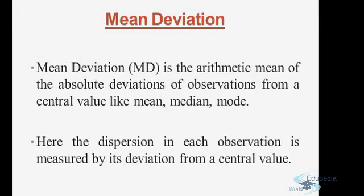Mean deviation is the arithmetic mean of the absolute deviations of observations from a central value like mean, median, or mode. Here, the dispersion in each observation is measured by its deviation from a central value.